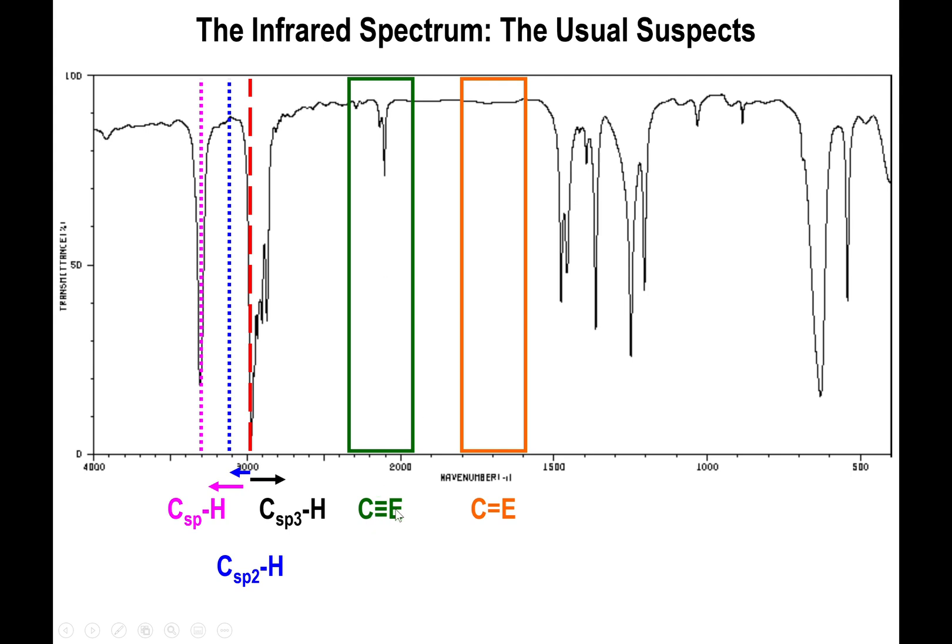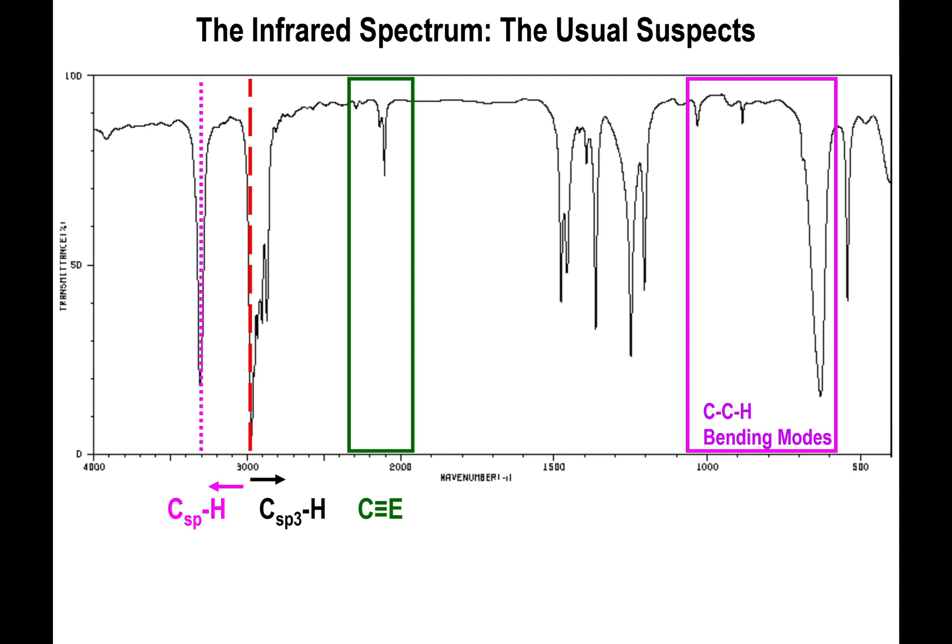So if you do have peaks at about 2200 you're looking at triple bonds - those could be carbon-carbon triple bonds or carbon-nitrogen triple bonds. If you have peaks at about 1600-1700 you're looking at double bonds - those could be your carbon-carbon double bonds or carbon-oxygen double bonds. And then for your aromatics you could have the bending modes that you look at, but like I said take that with a grain of salt. It doesn't always work out for the aromatics.